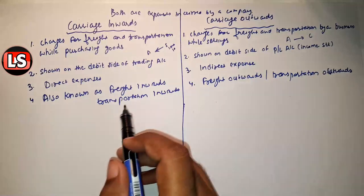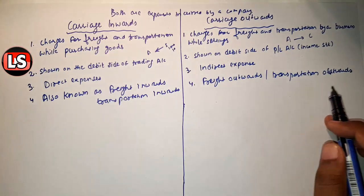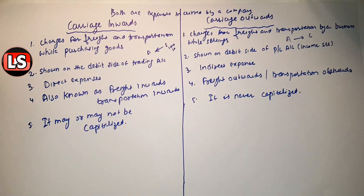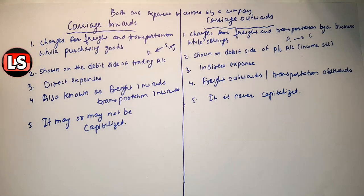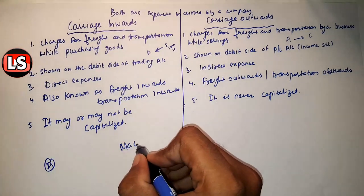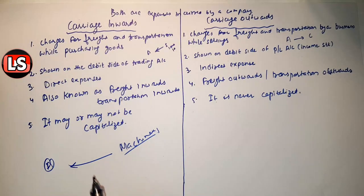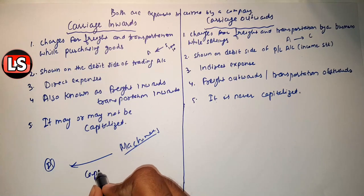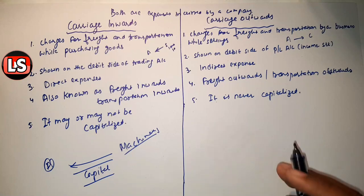Carriage inward is also called freight inwards or transportation inwards, and carriage outward is also called freight outwards or transportation outwards. Next is also a very important point: carriage inward may or may not be capitalized depending on the asset being purchased. For example, if a firm has set up machinery, the inward cost and installation charges will all be counted as capital expenditure — it will be capitalized. However, carriage outward is never capitalized.